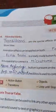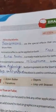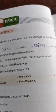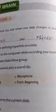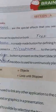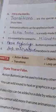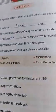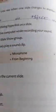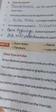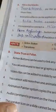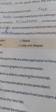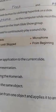Now the objectives of this chapter — fill in the blanks. Transition is a special effect that you see when a slide changes into another during slide show view. Animation effects can be applied on both text and objects on a slide. An action button is a ready-made button for defining a hyperlink on a slide. It is essential to connect a microphone to the computer while recording sound. The From Beginning button is present on the Start Slide Show group.